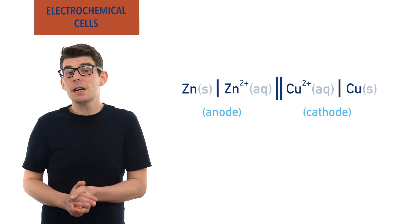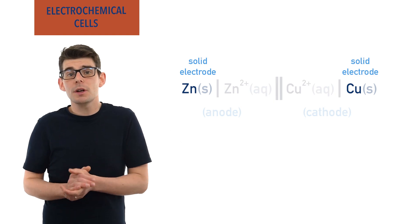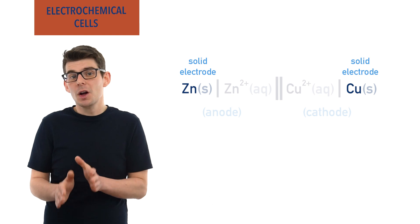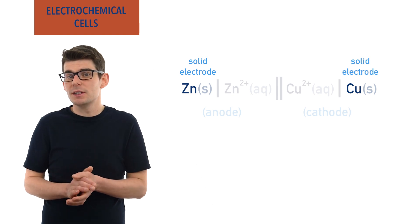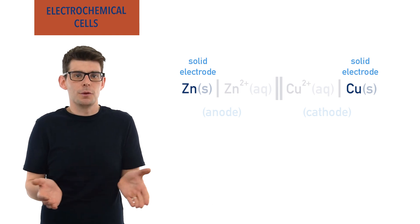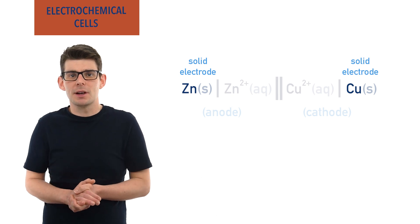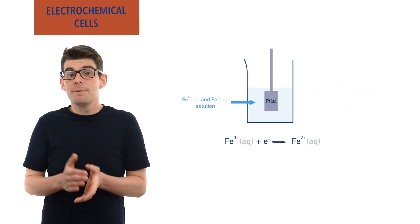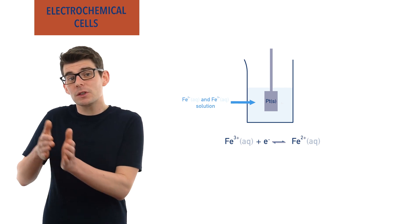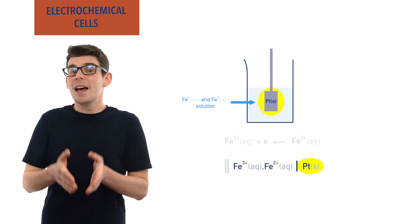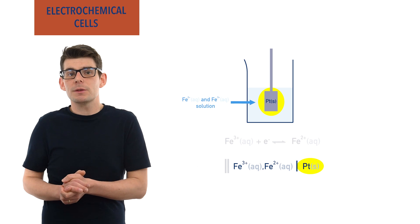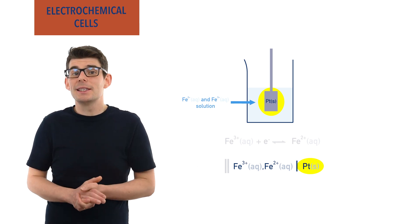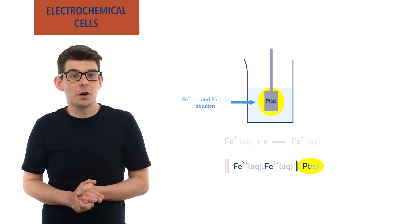The electrode material must always be shown. For most half cells, this is just the solid metal in the half equation. However, when there is no solid species in a half cell reaction — like for aqueous Fe²⁺ and Fe³⁺ ions — a platinum electrode must be used. This would be shown in the notation as being furthest away from the salt bridge, again separated from the other species in the half cell using a straight line. These more complicated examples have been outlined at chemistrystudent.com.